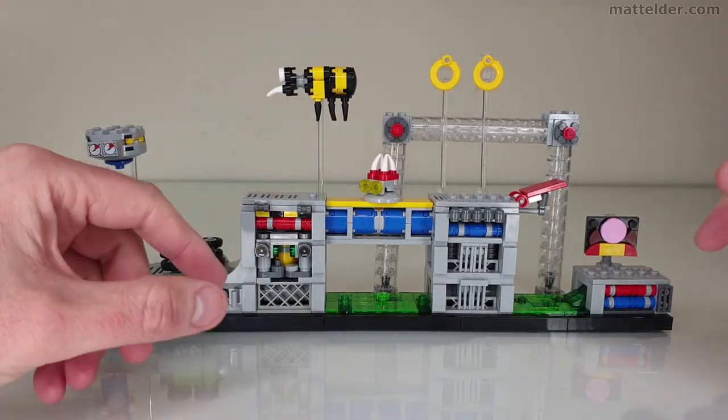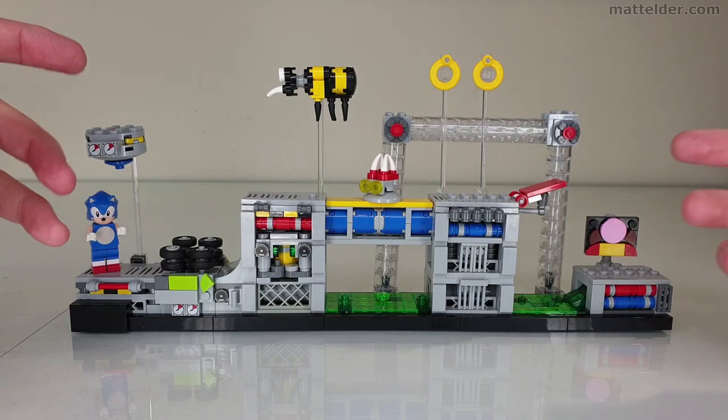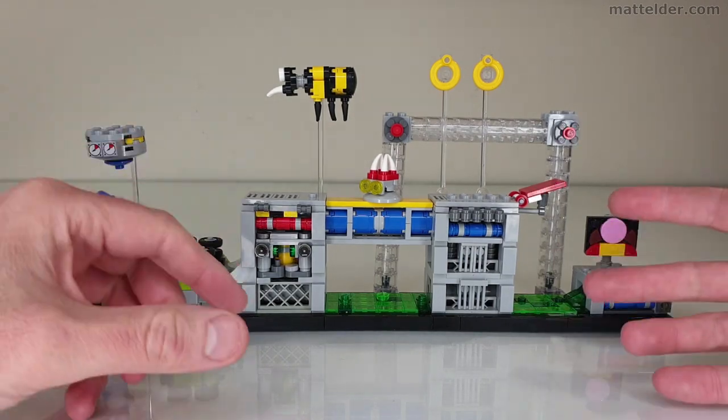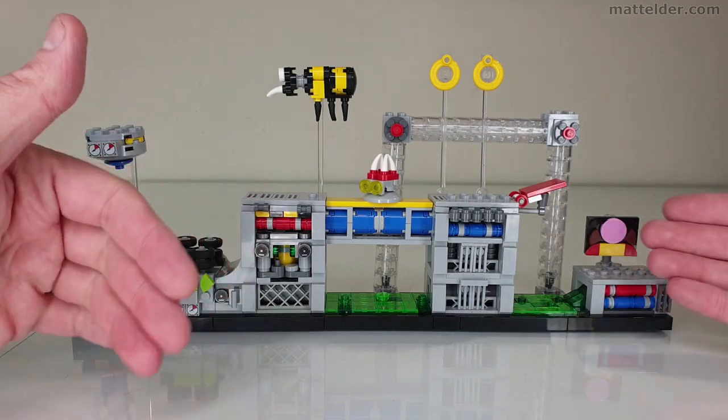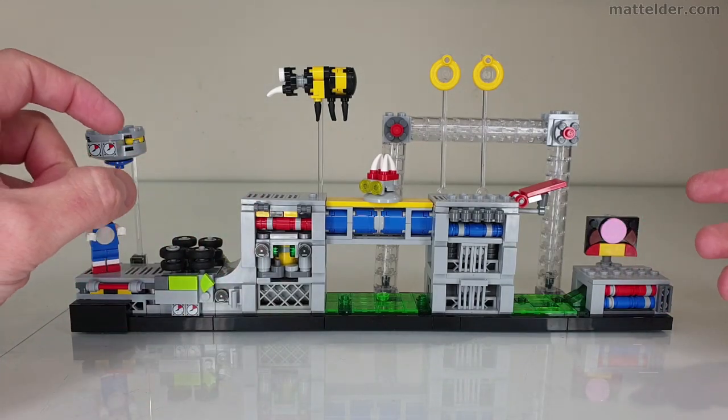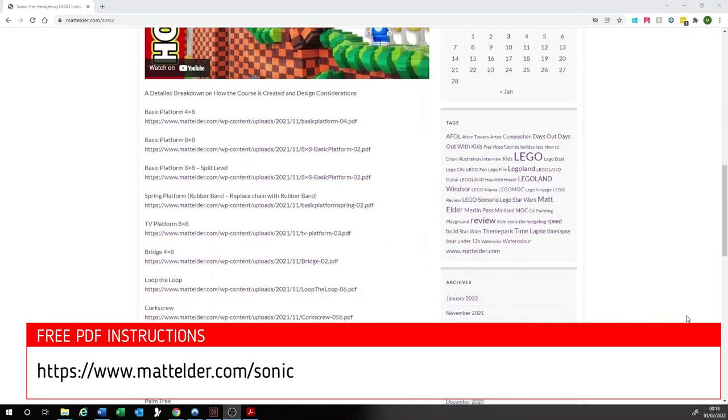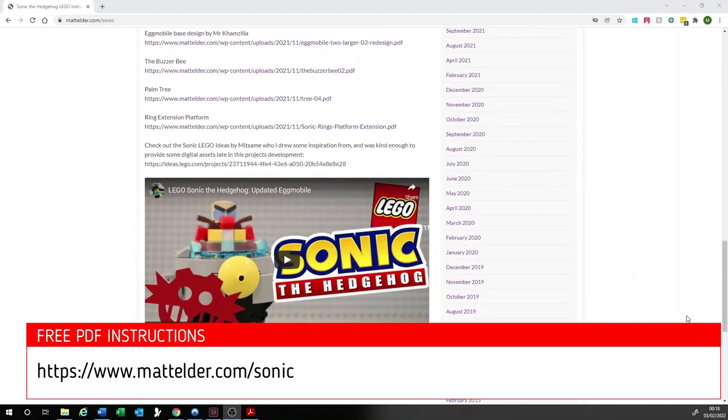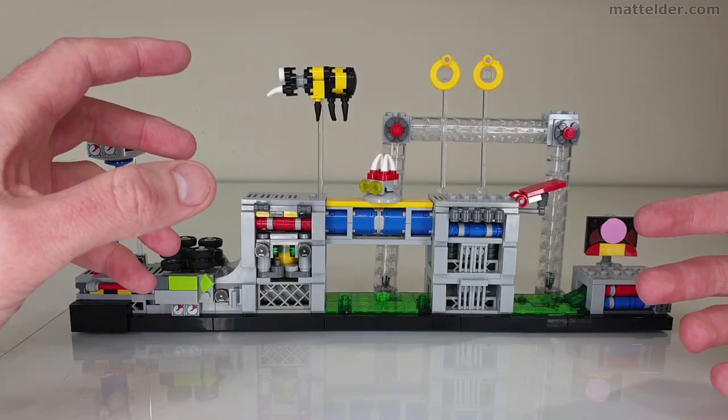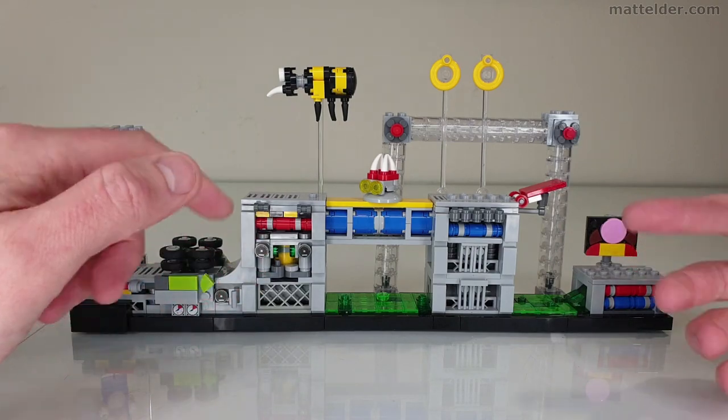With the way that these instructions are presented on Rebrickable it's for free and they just give you the actual studio model. So I've gone through the studio model and then broken it down into all the different steps and there'll be some instructions on my website mattelder.com/sonic where you can download at least the instruction PDF that I used.